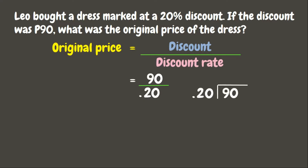Remember, before we can divide decimals we need to make sure the divisor is a whole number. Let us move the decimal point of the divisor all the way to the right. Since we moved two times in the divisor, we also need to move the decimal point in the dividend two times to the right — one, two — and put zeros in the empty place values. Now let us divide 9,000 by 20.